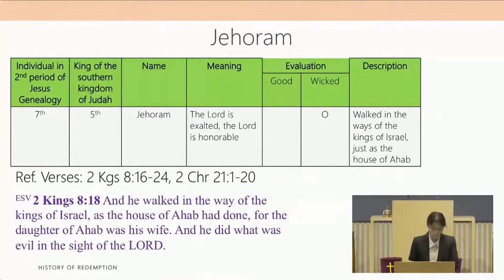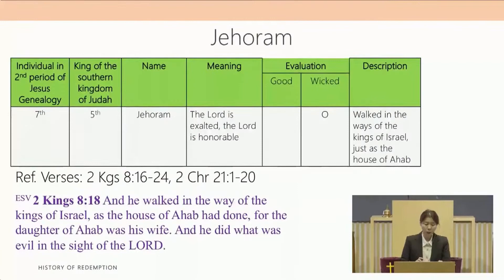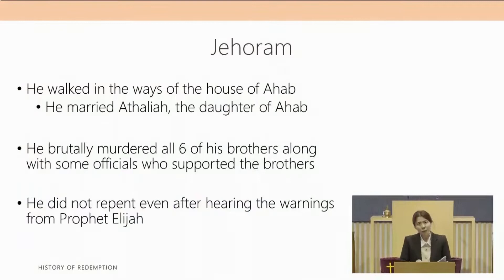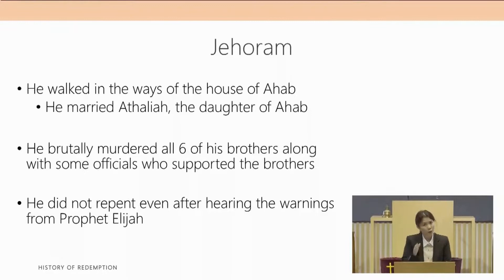The seventh individual in the second period of Jesus' genealogy is King Jehoram, the fifth king of the southern kingdom of Judah. The name Jehoram means the Lord is exalted, the Lord is honorable. He is evaluated as a wicked king. 2 Kings chapter 8 verse 18 says, he walked in the way of the kings of Israel as the house of Ahab had done, for the daughter of Ahab was his wife and he did what was evil in the sight of the Lord. He married Athaliah, daughter of King Ahab, and this marriage influenced his belief and lifestyle.